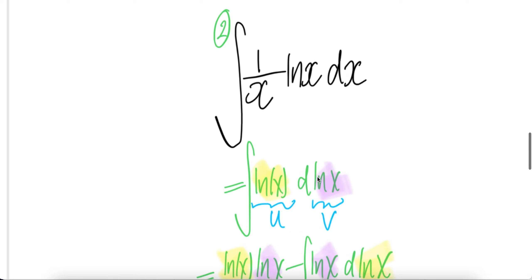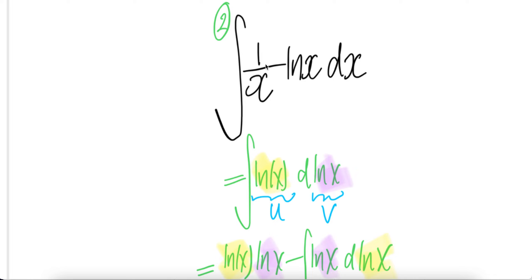Now let us look at the second way. In the second way, we will again push this into dx and then you get derivative of ln x is 1 over x dx.